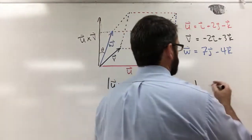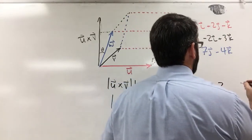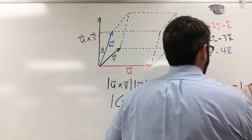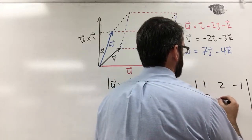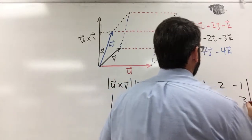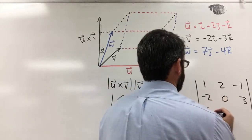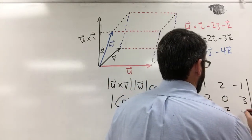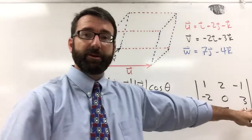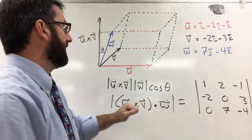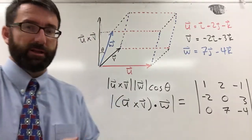So this three-by-three matrix is going to be: top row 1, 2, negative 1; the middle row will be negative 2, 0, and 3; and w, the bottom row, is going to be 0, 7, and negative 4. So if we find that determinant, then we're going to find the volume of this parallelepiped.